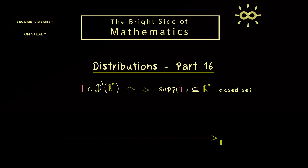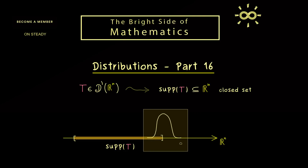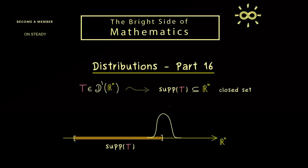Let's visualize Rn and the closed set in it. For example, the support could look like a specific region. By definition, any test function that has support completely outside of this closed set gives us the value 0 when applied to the distribution. In other words, only the part of the test function inside the support of T matters at all. For this example, the right-hand side of the test function could be anything and it would not change the result. This implies that we don't even need compact support for the test functions we use here.